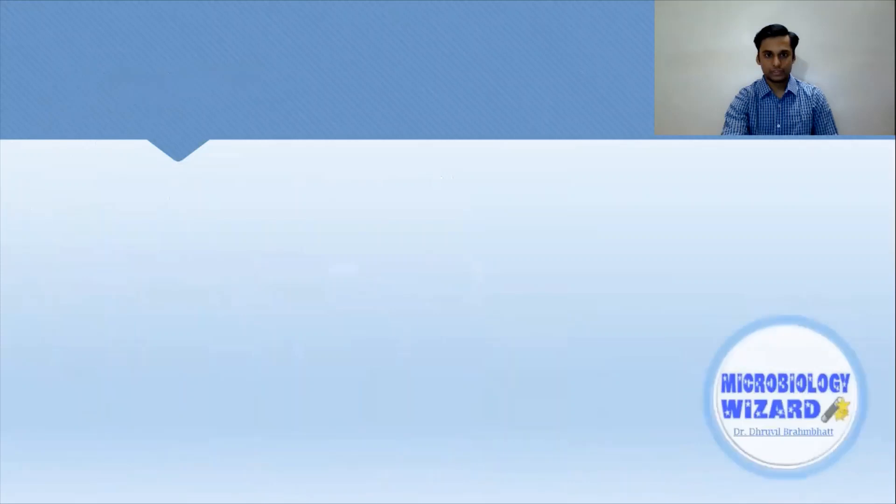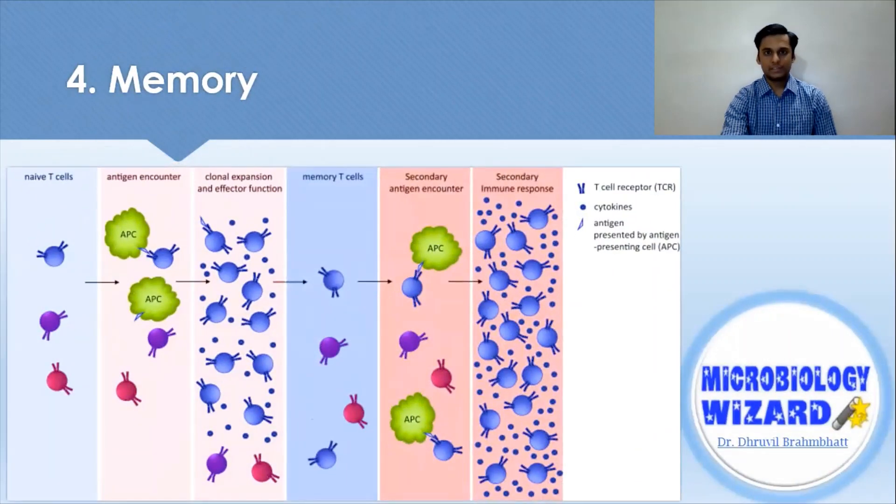Moving to the fourth feature, which is memory. It refers to the ability to recognize and quickly respond to previously encountered antigens. When re-exposed to the same pathogen or foreign particle, the adaptive immune response reacts so rapidly that there is no noticeable pathogenesis.